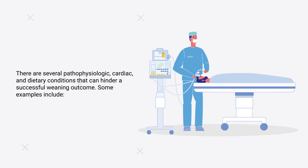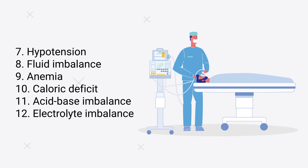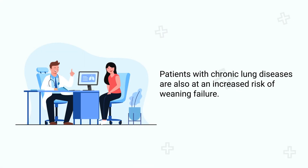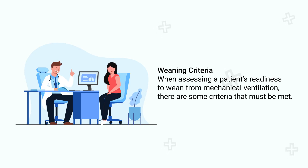There are several pathophysiologic, cardiac, and dietary conditions that can hinder a successful weaning outcome. Some examples include fever, infections, renal failure, sepsis, sleep deprivation, hypertension, hypotension, fluid imbalance, anemia, caloric deficit, acid-base imbalance, and electrolyte imbalance. Patients with chronic lung diseases are also at an increased risk of weaning failure.